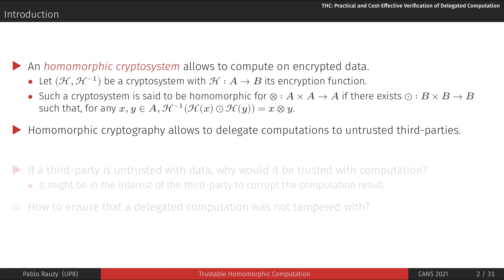A homomorphic cryptosystem allows computing on encrypted data. For example, if you want the product of two values x and y, and you have a cryptosystem that is homomorphic for multiplication, there is an operation you can compute on the encrypted versions of x and y, of which the result, when decrypted, gives you the value of x times y.